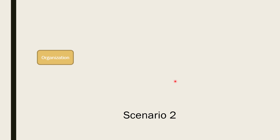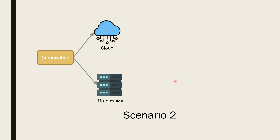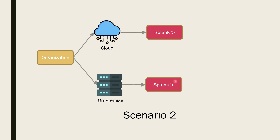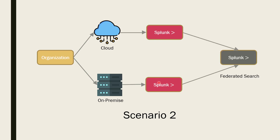There could be another scenario: for a particular organization, some less critical or less sensitive data is stored in the cloud, while more sensitive data is stored on on-premise instances. They may have a separate Splunk deployment for cloud and a separate one for on-premise. If there's a requirement to generate a report requiring data from both of these instances, that's another case where you would use federated search.